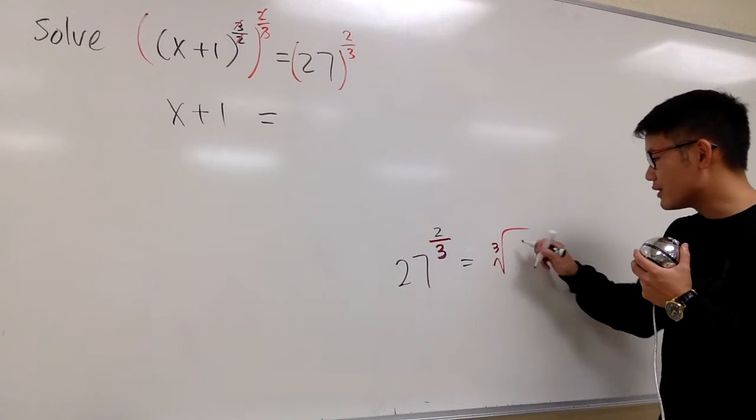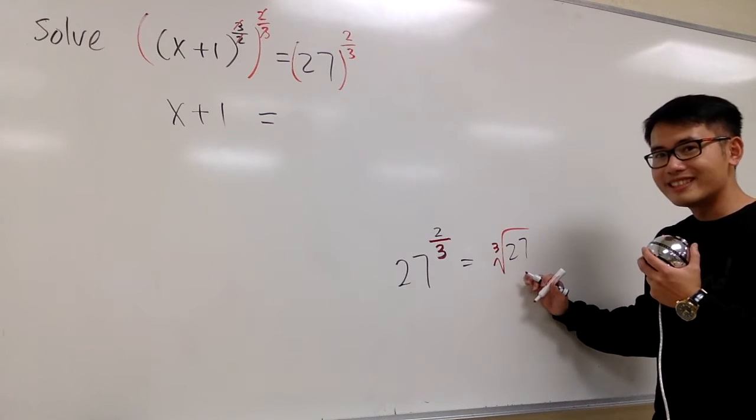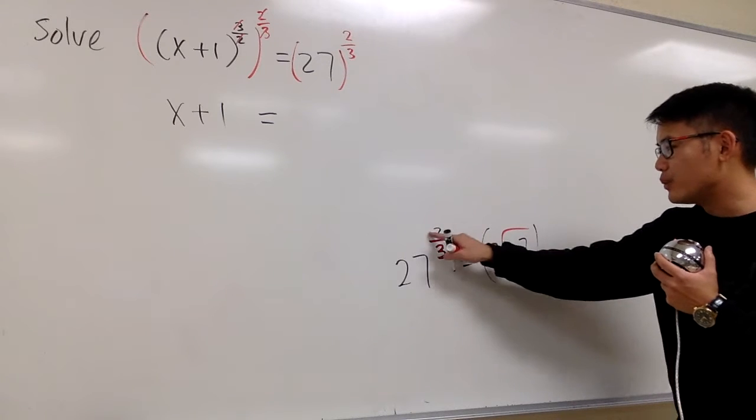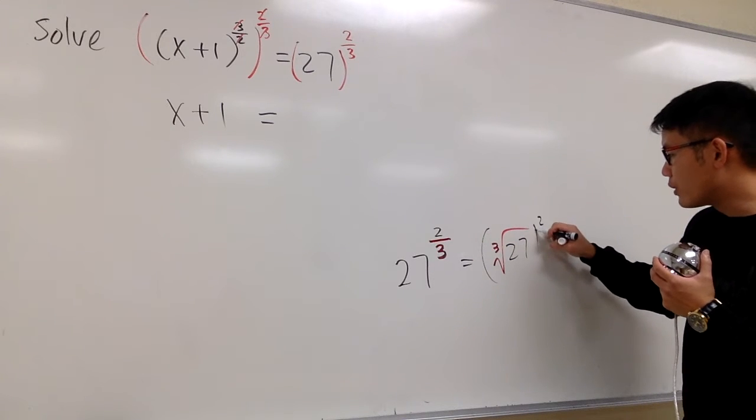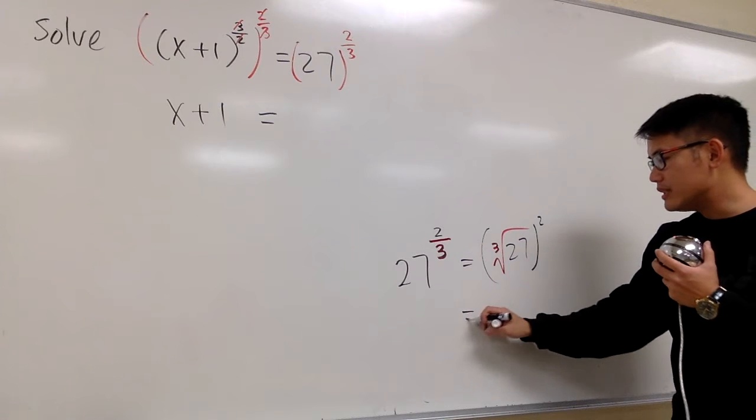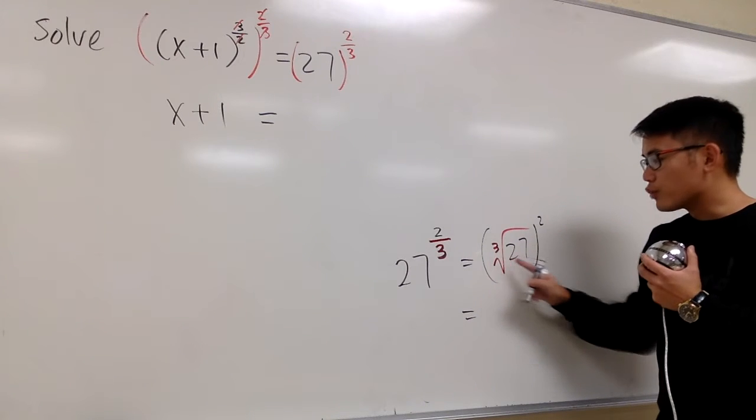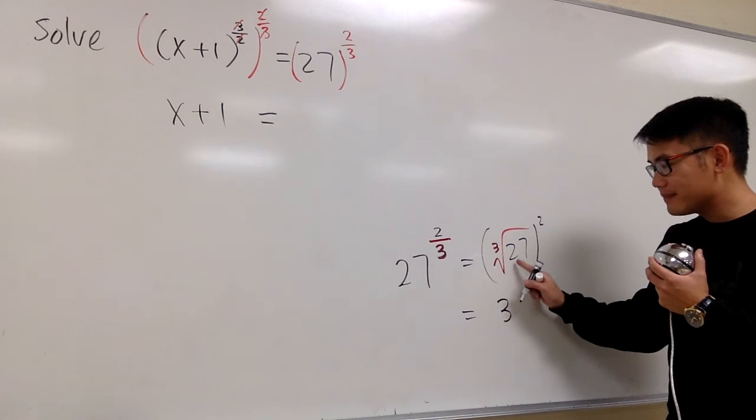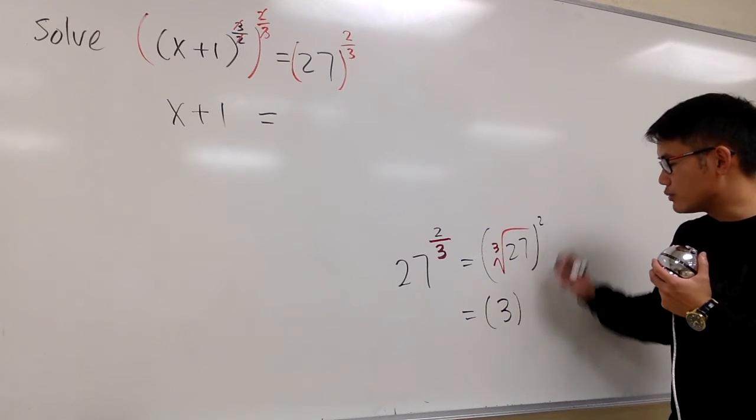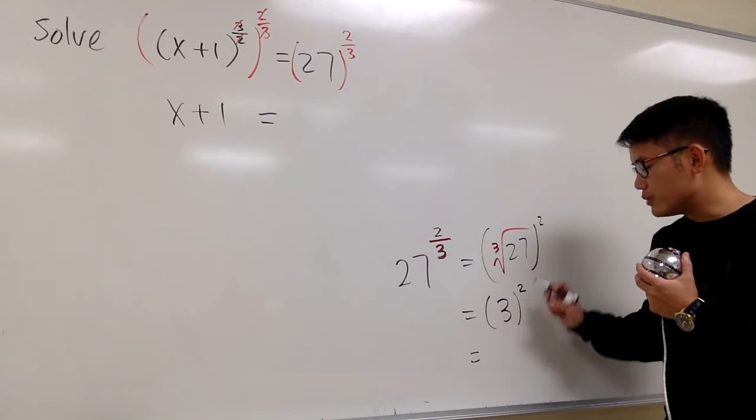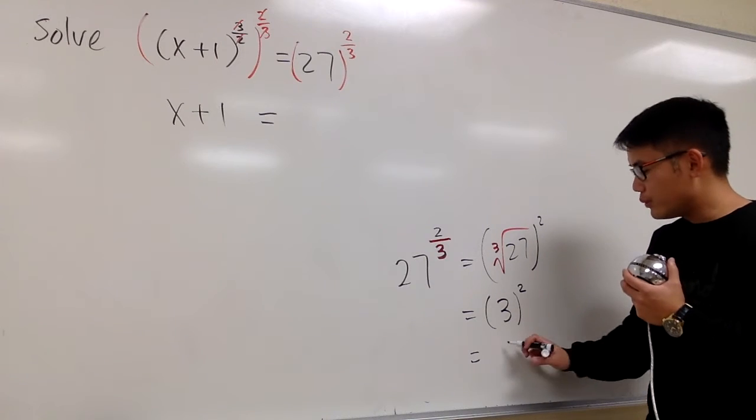And then we put down the 27 inside first, for computational purpose. And we put up parentheses, and then we raise that to the 2 power at the end. And you see that cube root of 27 is 3 inside, right? And then we have to take this raised to the 2 power. 3 to the 2 power, that means 3 times 3, we have 9.